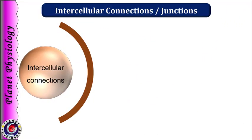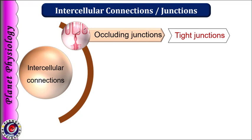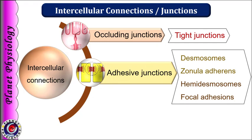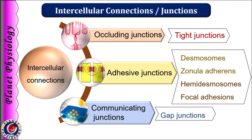Intercellular connections are also known as intercellular junctions. They are broadly divided into three groups. First is the occluding junctions, like tight junctions, which occlude the intercellular space. Next are the adhesive junctions, which attach cells to one another and also to the surrounding tissues. These provide strength and stability to the tissues and involve various cell adhesion molecules, including desmosomes, zonula adherens, hemidesmosomes, and focal adhesions. The third type is communicating junctions like gap junctions, which allow transfer of ions, molecules, and impulses and permit cells to communicate with each other rapidly.